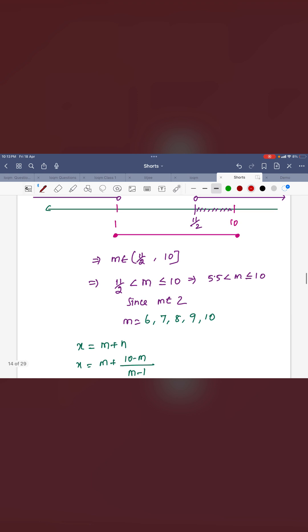You can see the intersection here is 11 by 2 to 10. So, 11 by 2 means 5.5 to 10. Which are the integers there? 6, 7, 8, 9, 10 only is possible.